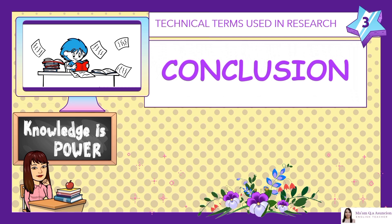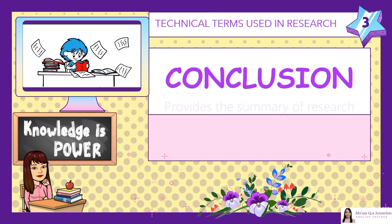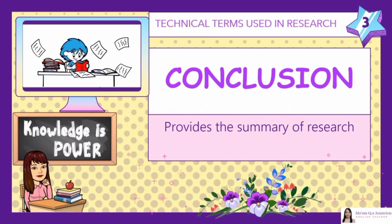Number 3: Conclusion. Provides the summary of research. The conclusion is intended to help the reader understand why research should matter to them after they have finished reading the paper. A conclusion is not merely a summary of your points or a restatement of your research problem, but a synthesis of key points.